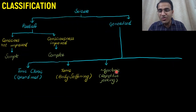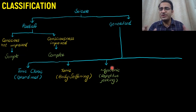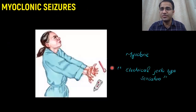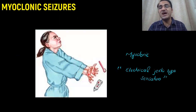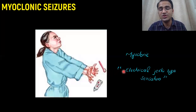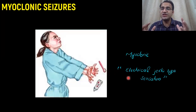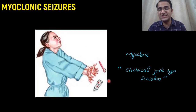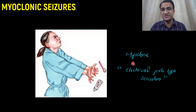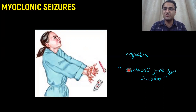In myoclonic seizure, which is a type of generalized seizure, there is repetitive jerking of the body, usually occurring more in the upper arms than the lower limbs. It is like an electrical jerk-type sensation where the whole body is trembling — that is myoclonic seizure, since it involves jerky contraction of the muscles.